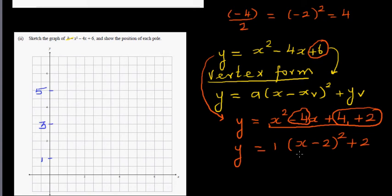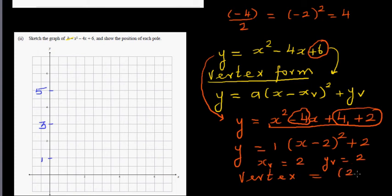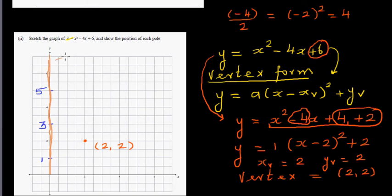Comparing with the vertex form, the x-coordinate of the vertex is 2 and the y-coordinate of the vertex is also 2. So the vertex is (2, 2). Now to sketch the graph and show the position of each pole — one pole is already here at x = 0. So let's name this as pole 1.